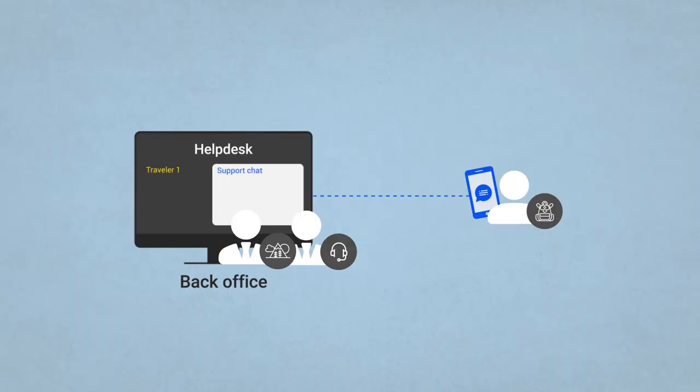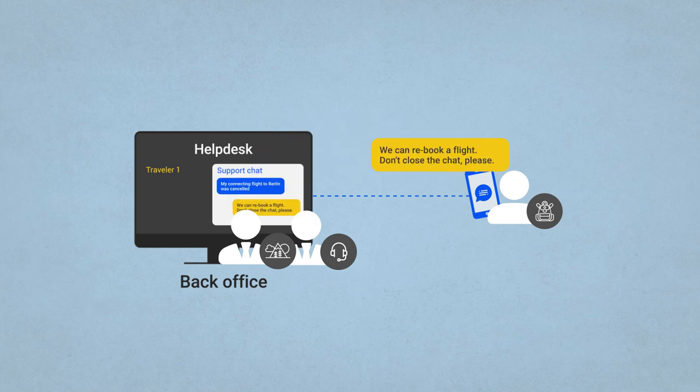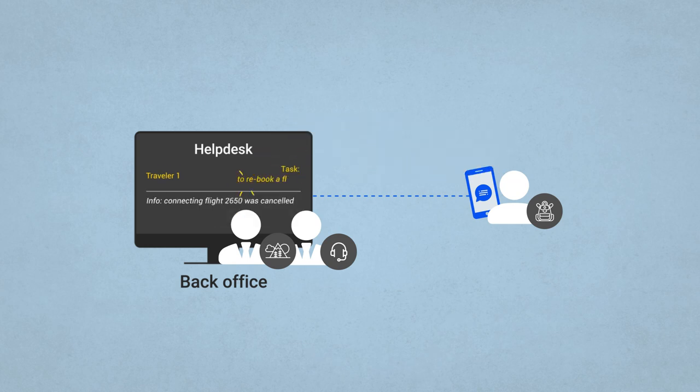Also, help desk may have an integrated messaging application to let travelers write directly to an agent using a mobile app, or say, Facebook Messenger, or even email. Once a traveler has detailed their problem, travel agent or customer support will assign a task in a help desk menu.